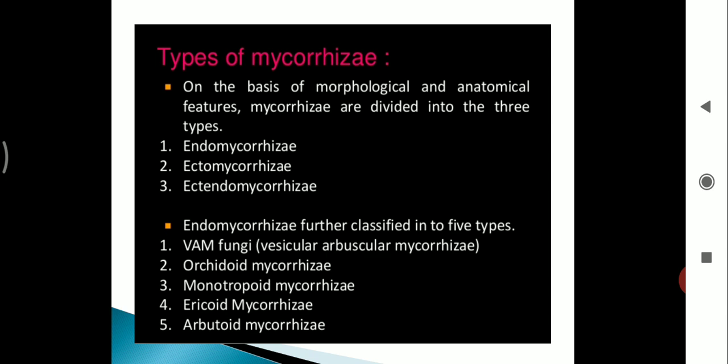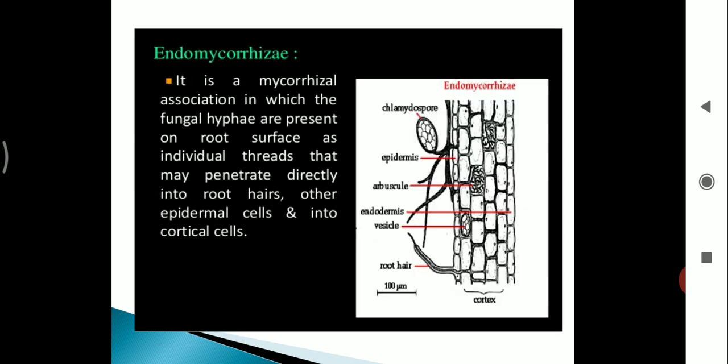Next, types of mycorrhizae. On the basis of morphological and anatomical features, mycorrhizae are divided into three types: endomycorrhizae, ectomycorrhizae, and ectendomycorrhizae. The endomycorrhizae are divided into five types: VAM fungi, that is vesicular arbuscular mycorrhizae, orchid mycorrhizae, monotropoid mycorrhizae, ericoid mycorrhizae, and arbutoid mycorrhizae.